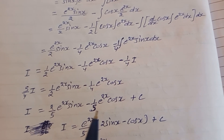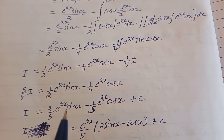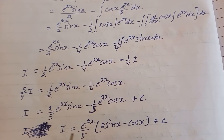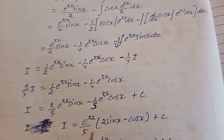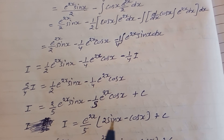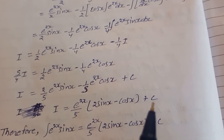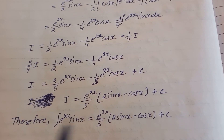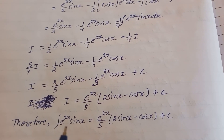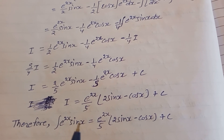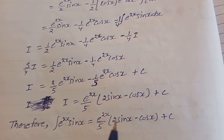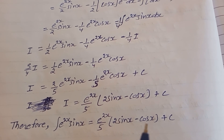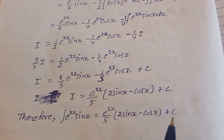Taking e^(2x)/5 as common from both terms, we get I equals e^(2x)/5 times the bracket of (2·sin(x) minus cos(x)) plus C. Therefore, the integration of e^(2x)·sin(x) equals e^(2x)/5·(2·sin(x) minus cos(x)) plus C. That is the solution.